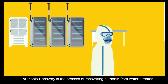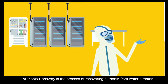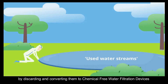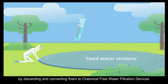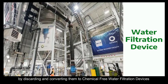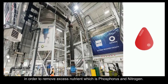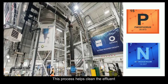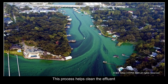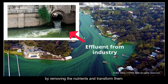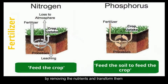Nutrients Recovery is the process of recovering nutrients from water streams by discarding and converting them to chemical-free water filtration devices in order to remove excess nutrients, which is phosphorus and nitrogen. This process helps clean the effluent by removing the nutrients and transform them into an efficient, reusable feedstock.